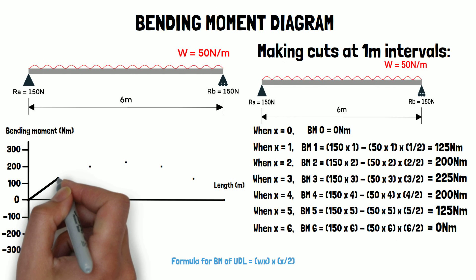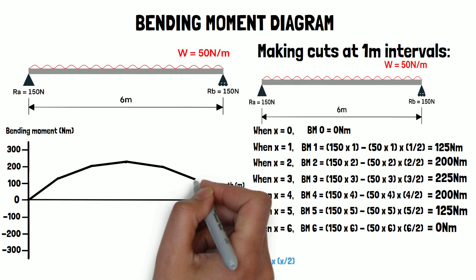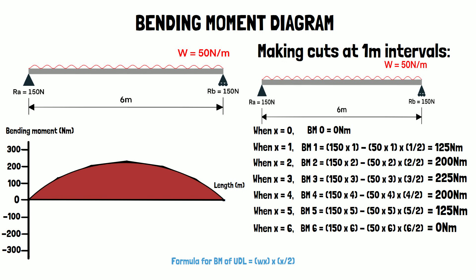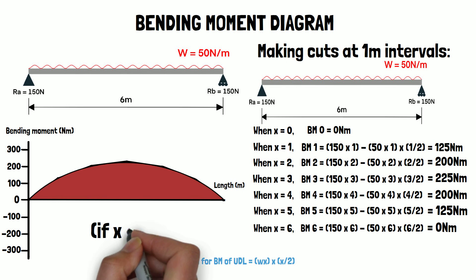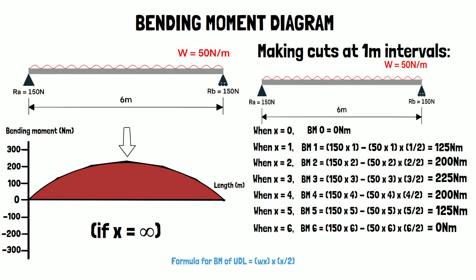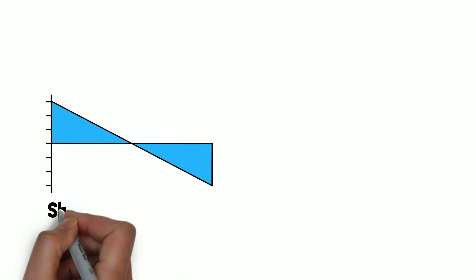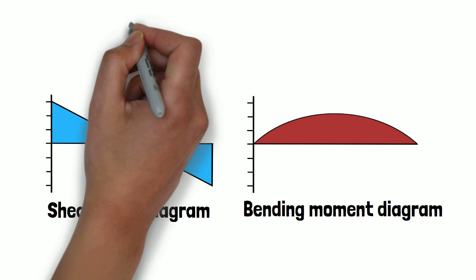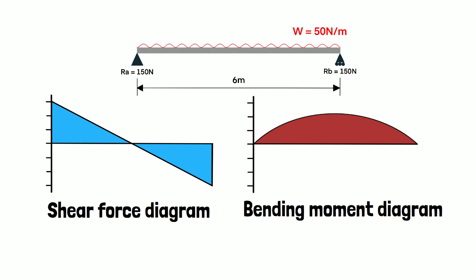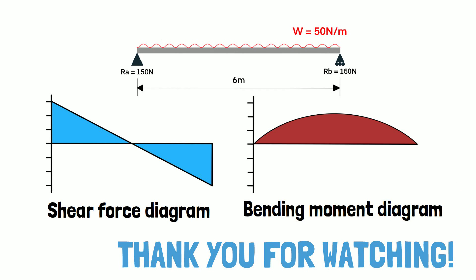By connecting the dots we get the finished bending moment diagram for our beam. The curvature of the graph indicates that with more points calculated, the graph would be a smooth curve. We have also identified the point of maximum deflection to be at 3 meters. Thank you for watching — please check the channel for similar engineering related content.